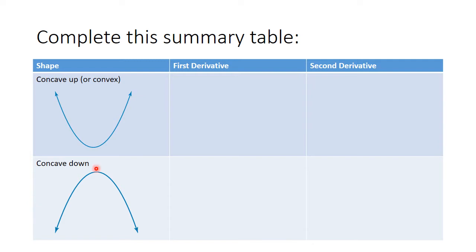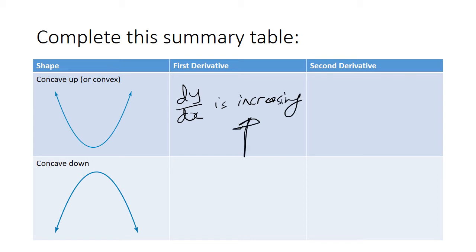So what do you think the first derivative of this function would be? The first derivative has to be increasing, because the gradient is increasing — dy/dx is increasing. What about the second derivative? Well, the second derivative is the derivative of the first derivative. If dy/dx is increasing, do you think the second derivative would be positive or negative? Obviously it's going to be positive — it's greater than zero.